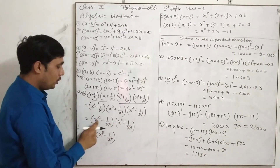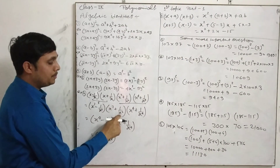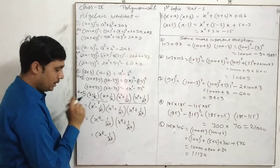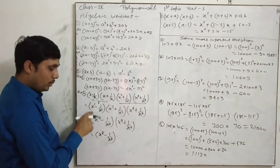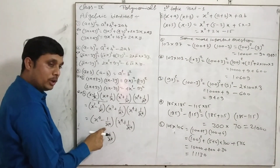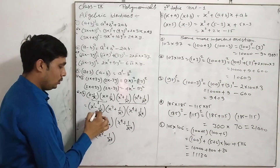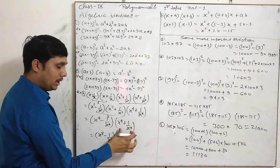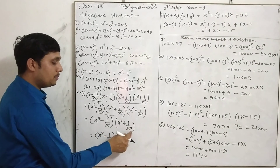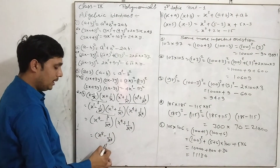Now look at these two formulas again. Applying (a − b)(a + b) = a² − b². Here x squared gives x to the power 4, and 1 upon x squared gives 1 upon x to the power 4. Applying the identity again — (a − b)(a + b) equals a squared minus b squared — gives the final answer.